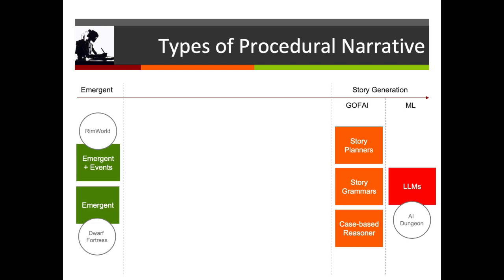If we think about types of procedural narrative, at one end of the spectrum you might place emergent narrative that we talked about in the last video — in their purest form, like Dwarf Fortress, or games like RimWorld, where we have emergent narratives plus an event system that provokes the disequilibrium that generates drama. At the other end of the spectrum we have systems that actually generate stories from scratch — good old-fashioned AI systems like story planners, story grammars, or case-based reasoners, and these days we might imagine using machine learning techniques, something like a large language model.